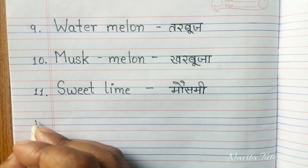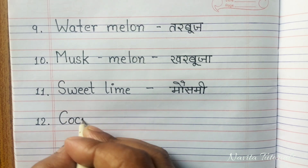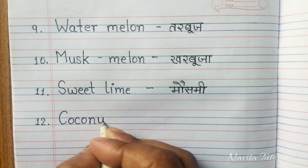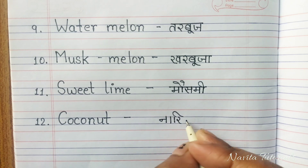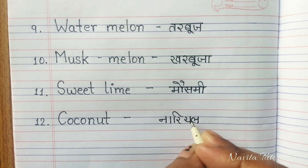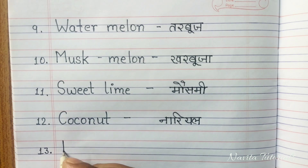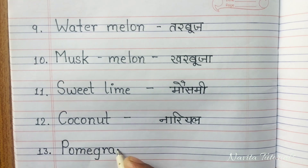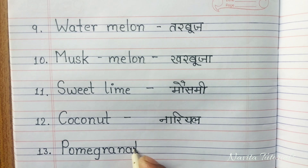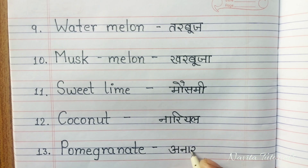Twelfth: C-O-C-O-N-U-T, Coconut. Coconut means Nariyal. Thirteenth: P-O-M-E-G-R-A-N-A-T-E, Pomegranate. Pomegranate means Anar.